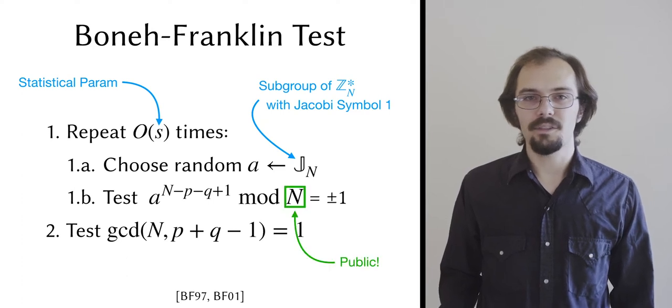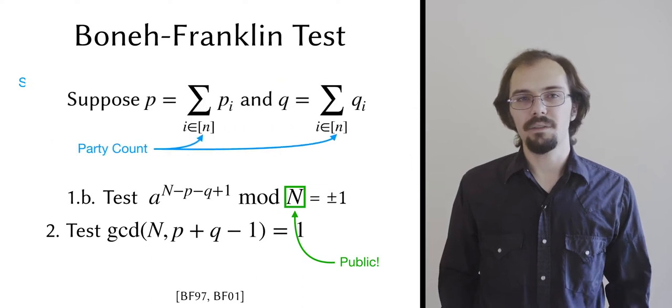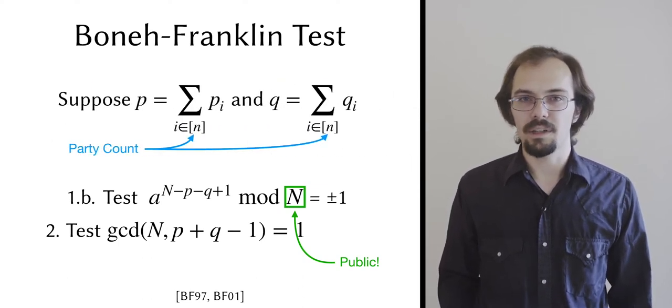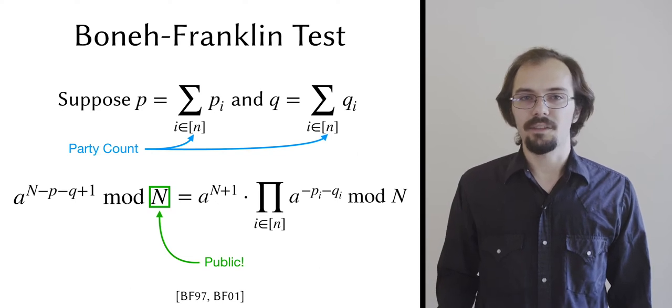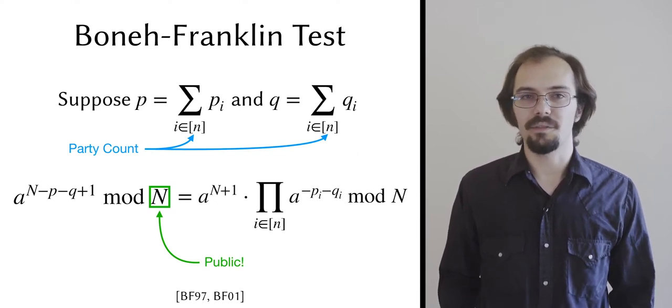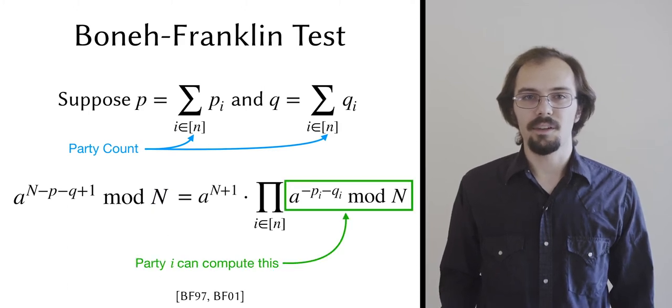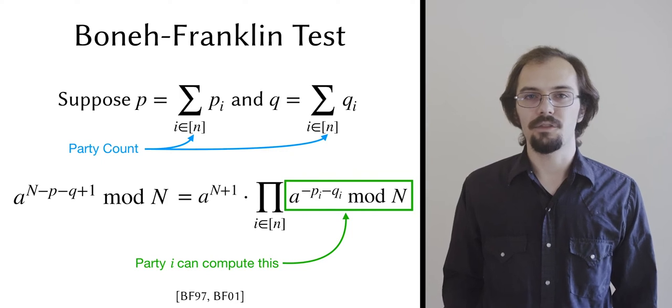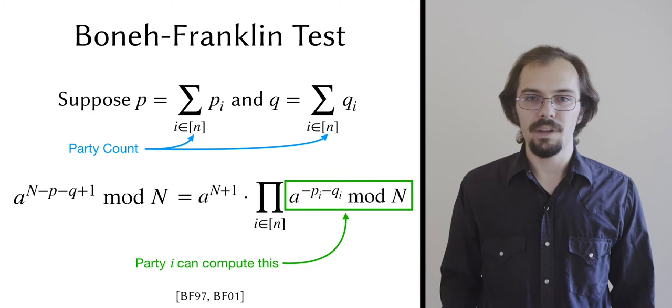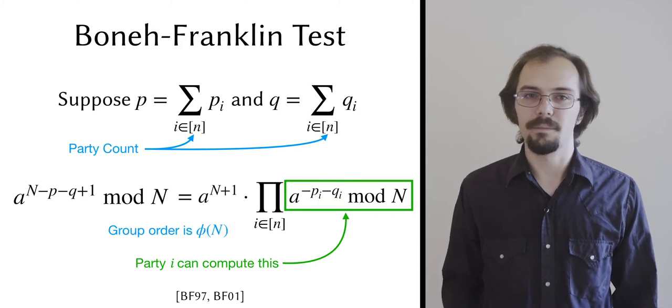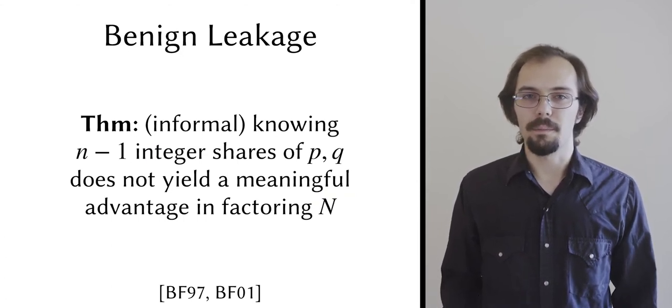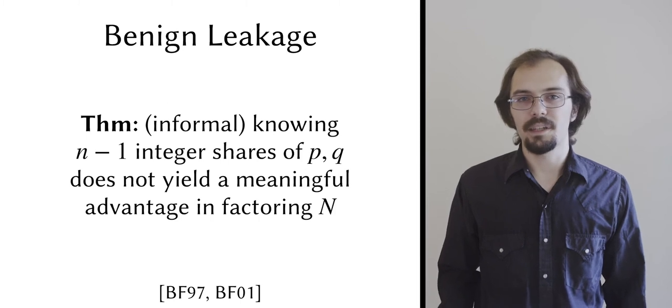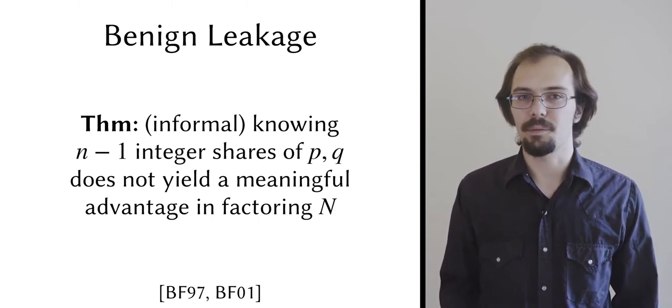The key here is that the modulus n is the public output of the protocol. This means that we can cut the factors p and q into integer shares, one share of each for every party, and then rewrite the test as the product of terms that the parties can compute locally. An integer sharing in this case is simply a set of randomly chosen positive integers that add up to the shared value. This style of sharing is important because it yields a natural method for reconstructing p and q modulo phi of n in the exponent, where phi of n is the order of the multiplicative group modulo n. If you know one or more integer shares of a value, then you know both upper and lower bounds on that value. In other words, integer shares leak some information. Boneh and Franklin provide a proof that this leakage doesn't grant an adversary any meaningful advantage in factoring the biprimes that their protocol produces.